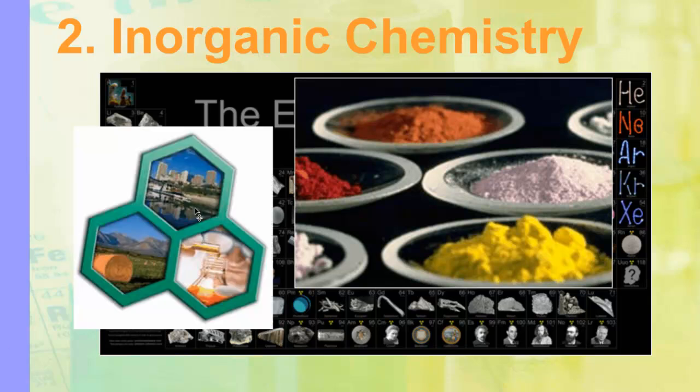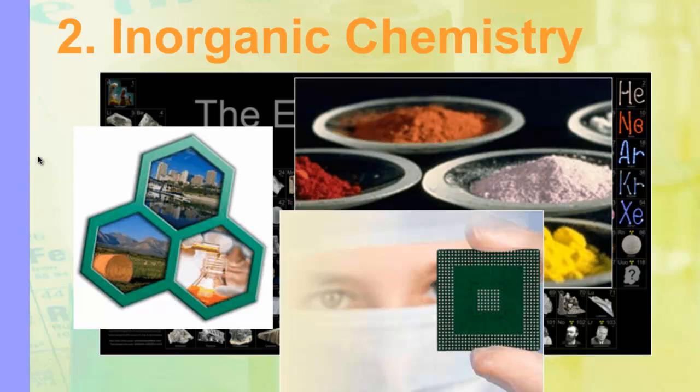Different areas, you know, fertilizers and things like that are inorganic. Dealing with water purifications, a lot of times inorganic. Food processes and stuff like that, dealing with inorganic. And a lot of industries use different chemical processes in whatever industry they're in. It happens to be electronics, manufacturing, computer chips, silicon, right? Definitely inorganic.